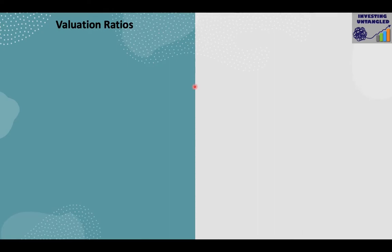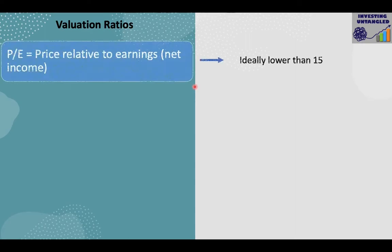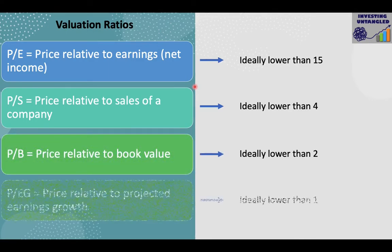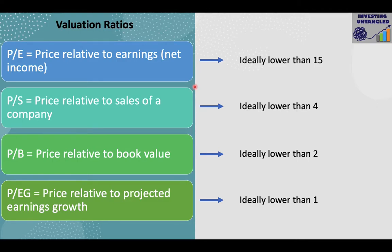Valuation ratios give us an idea of how expensive or cheap a company's stock is in relation to its earnings or net income, its sales or revenue, its book value, and its projected earnings growth. These ratios tell you how much of a price you're paying to own the company's stock. The higher a price you pay relative to earnings, sales, book value, or earnings growth, the lower your returns will be — like buying a house worth $100,000 but paying a million for it.